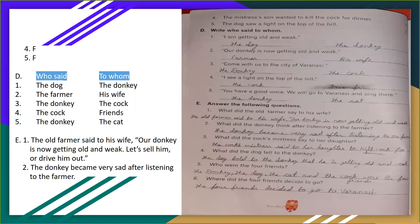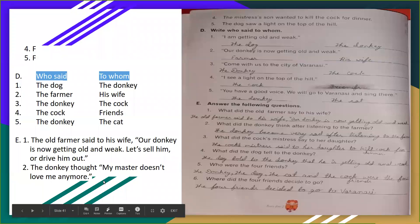Second, what did the donkey think after listening to the farmer? Donkey kya sochta hai farmer ki baat ko sunkar? The donkey thought my master doesn't love me anymore. Donkey sochta hai ki mere malik ab mujh se pyar nahi karta hai.